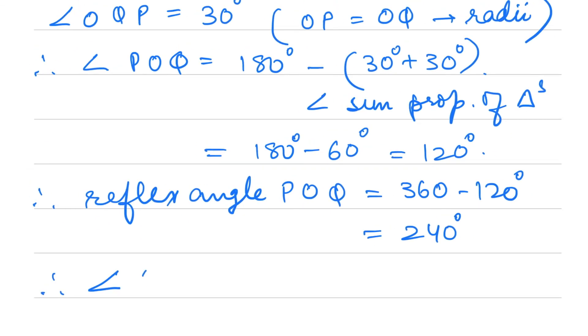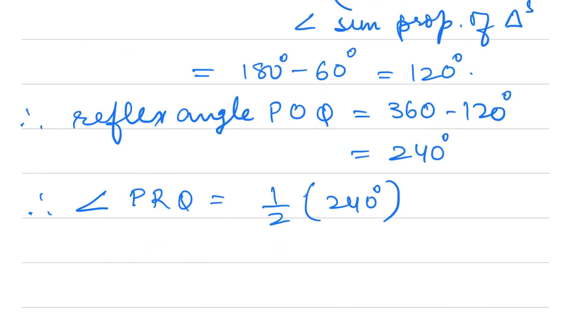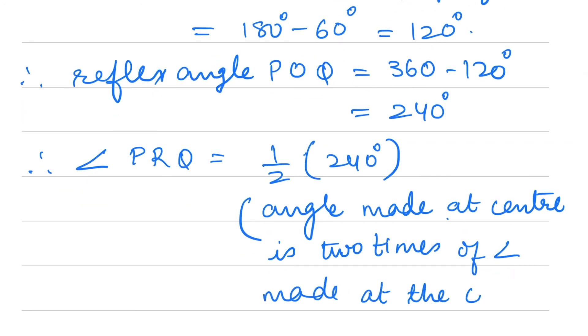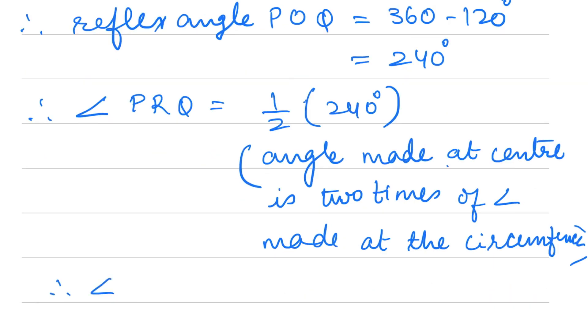Therefore angle PRQ = 1/2 × 240° = 120°. The reason is that the angle made at the center is 2 times the angle made at the circumference.